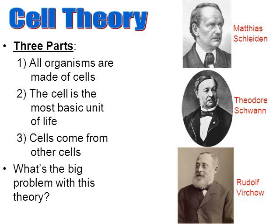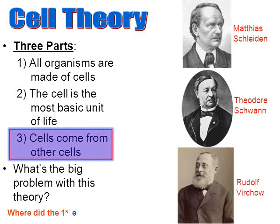When you combine the work of Schleiden, Schwann, and Virchow, we have what's called the cell theory. But there really is a big problem with this theory — and I hope you can identify it as part number three: cells come from other cells. Those who argue against the cell theory ask: where did the first ever cell come from? That's a legitimate question that science right now really doesn't have a good understanding of. Science does not have a good understanding for how life or cells could have begun — that really is one of the big mysteries of cell biology.